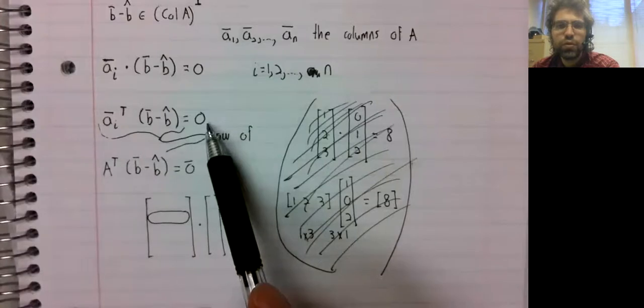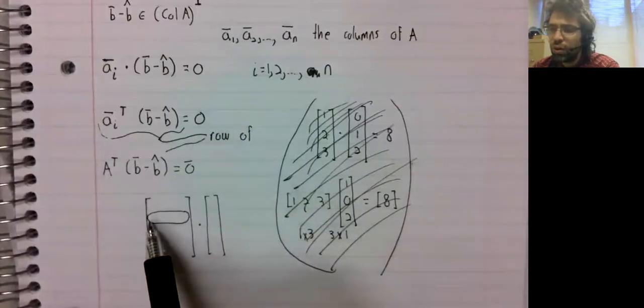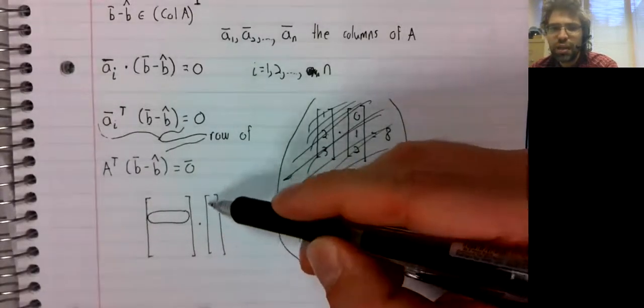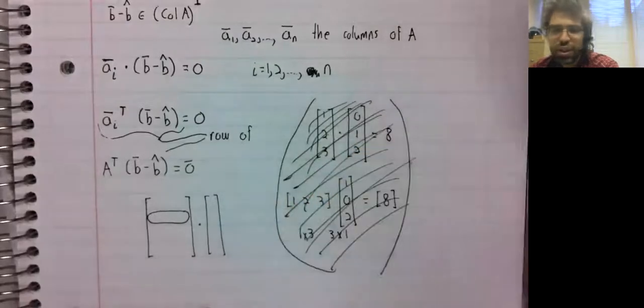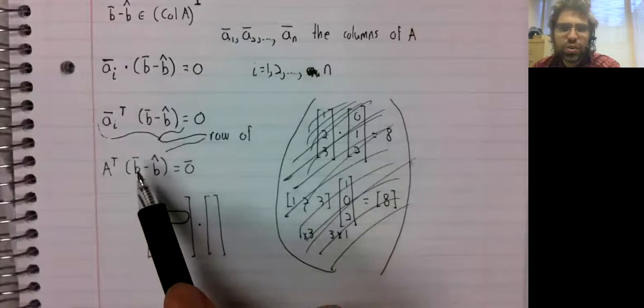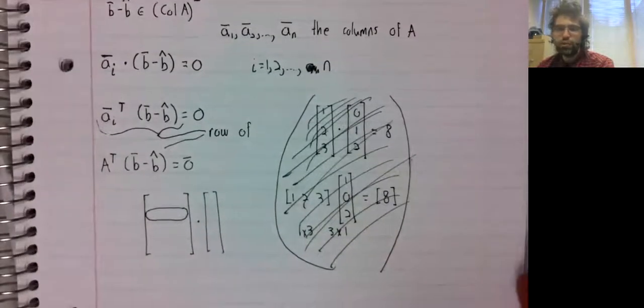And this is telling us that these dot products are equal to zero, these products are equal to zero. All of these rows times this vector b minus b hat, they all equal zero. So the entire product equals zero.